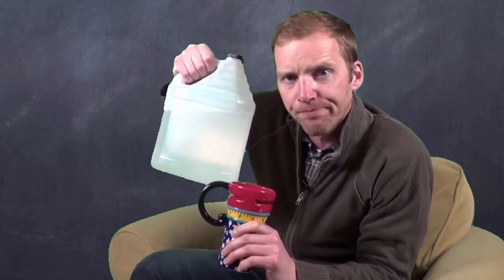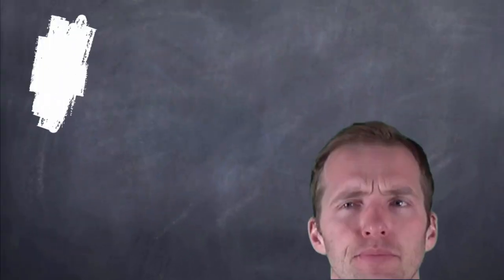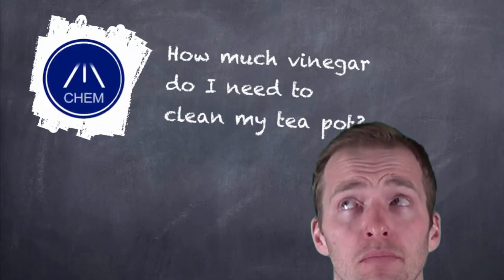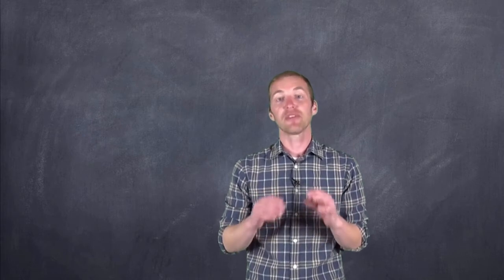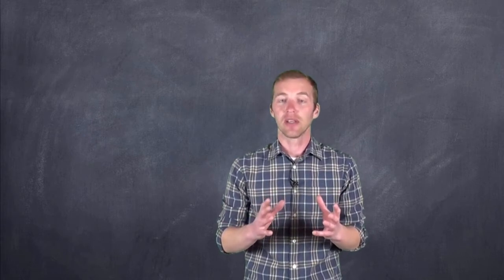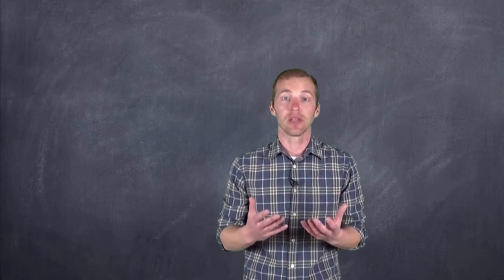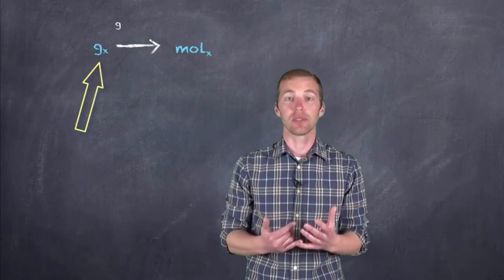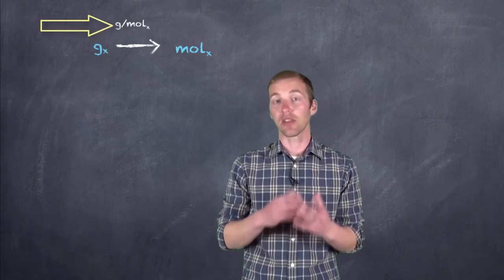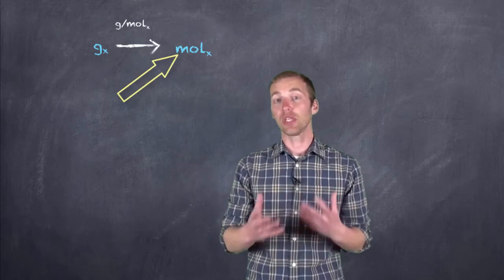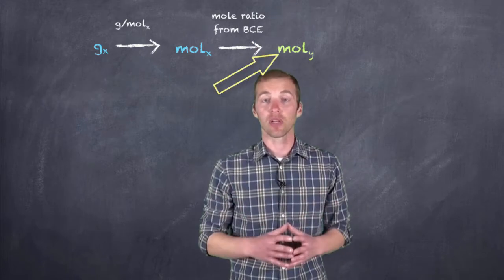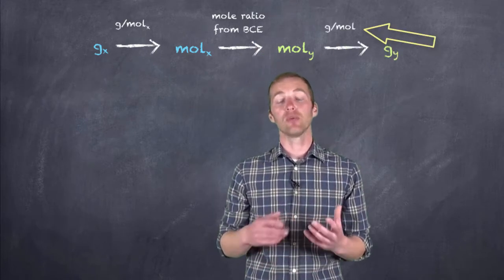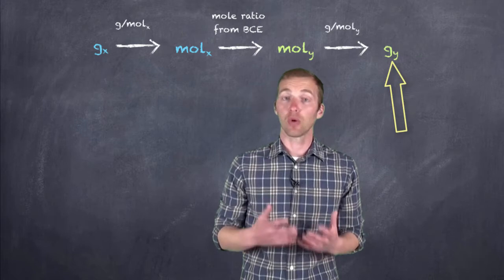Now in order to answer this interesting question, we have to first review stoichiometry. Up until this point we dealt with masses: we took the mass of a particular substance, used the molar mass to get the number of moles of that substance, used the mole ratio from the balanced chemical equation to figure out the number of moles of the unknown, and then used the molar mass of that unknown to figure out the mass. So: mass to moles, moles to moles, moles to mass.